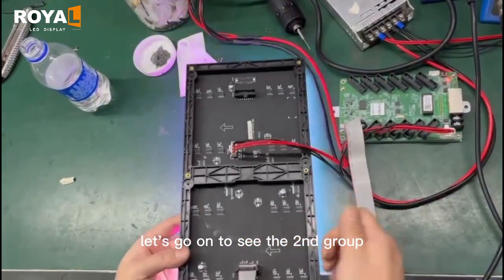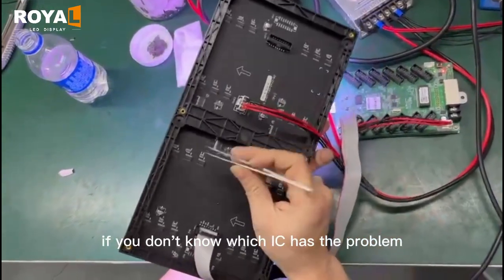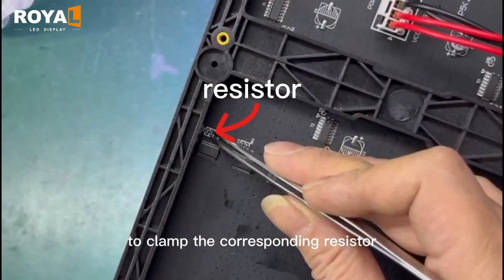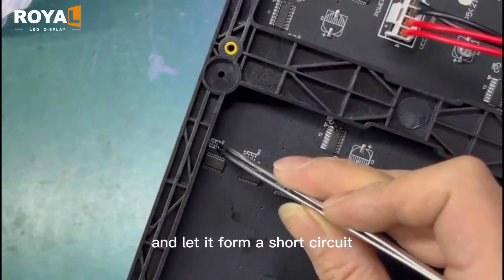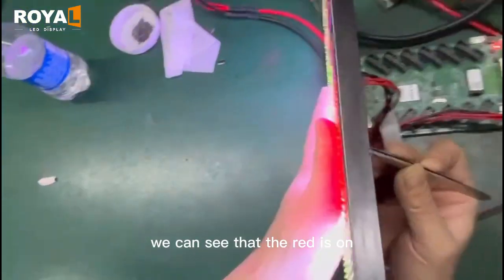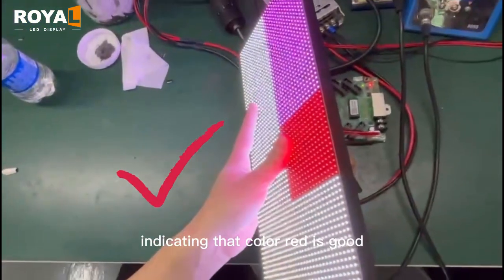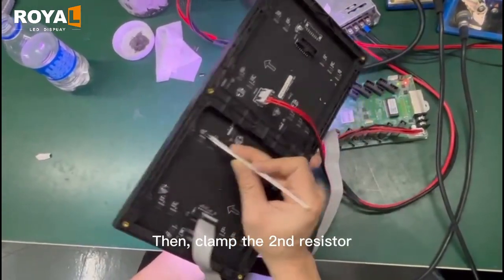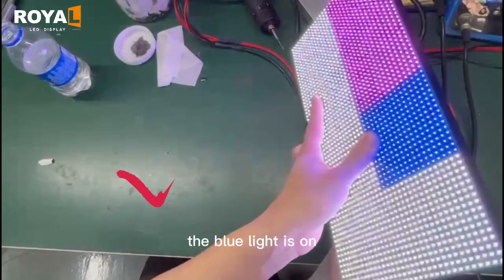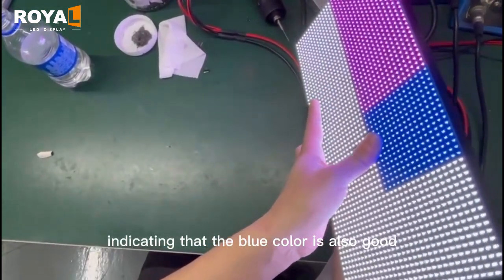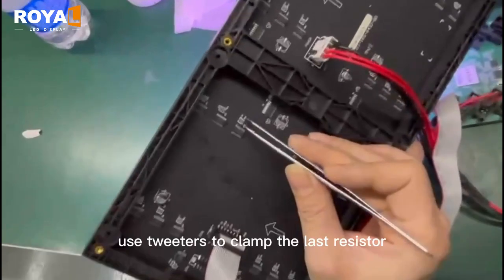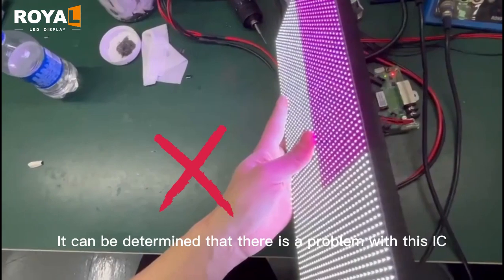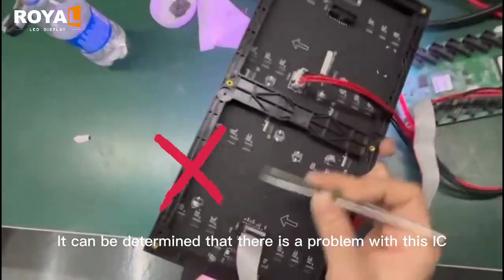Let's go on to see the second group. If you don't know which IC has the problem, we have to use tweezers to clamp the corresponding resistor and let it form a short circuit. We can see that the red is on, indicating that corner red is good. Then clamp the second resistor. The blue light is on, indicating that the blue corner is also good. Use tweezers to clamp the last resistor. If the green is not on, it can be determined that there is a problem with this IC.